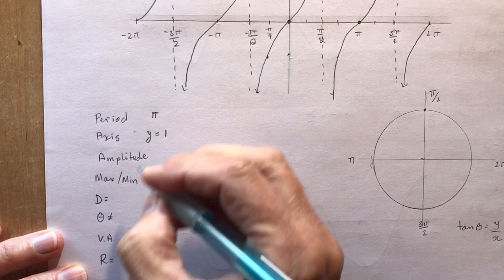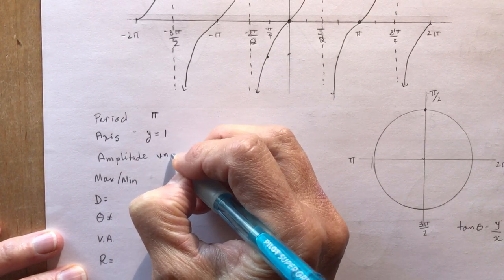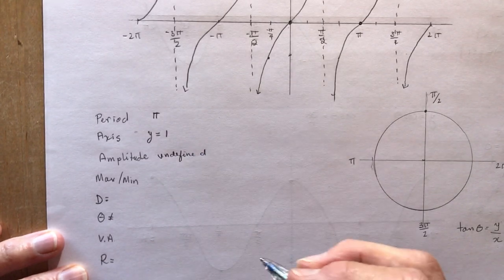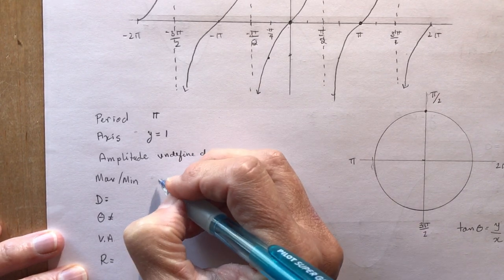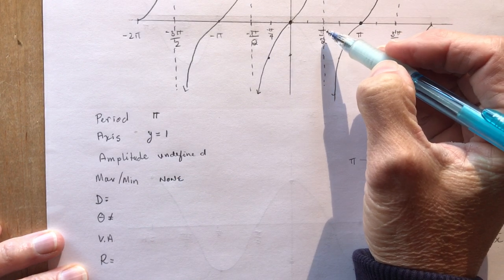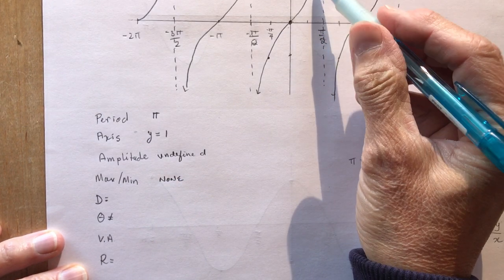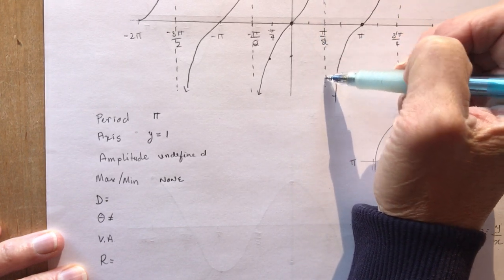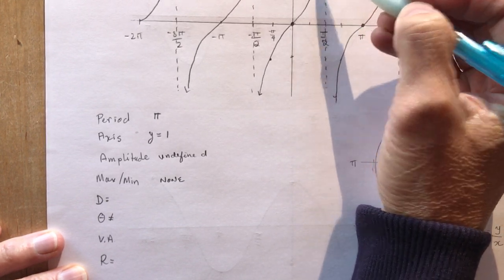Max or minimum values, none. Because if you plugged in something really close to pi over 2, you would go higher and higher and higher. So it's approaching, just like in all the other graphs where we worked with asymptotes, it approaches this.